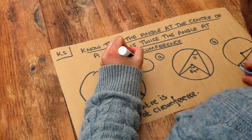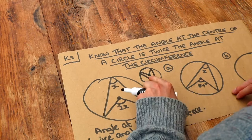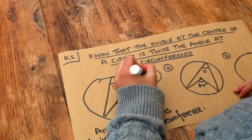For example, like this, with that at the centre. That angle would still be twice that angle there.